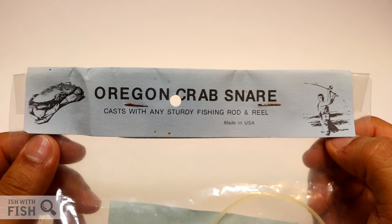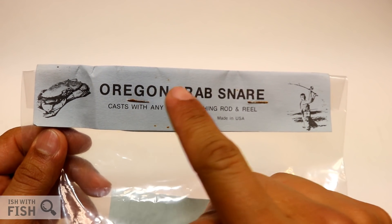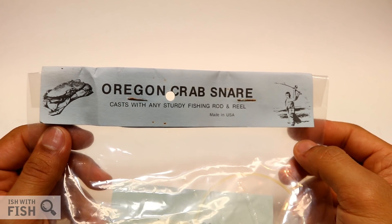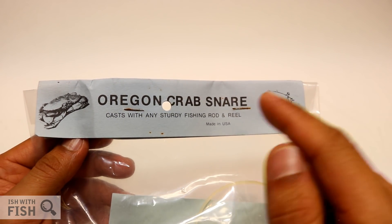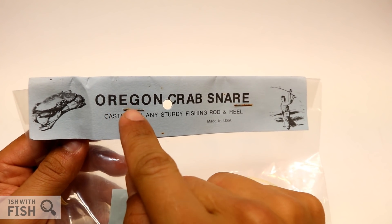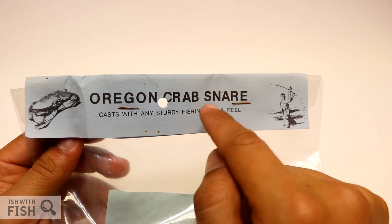In today's video we'll be taking a look at a vintage crab snare called the Oregon Crab Snare. If you're not familiar with crab snaring, it's a really fun method of taking crabs using any heavy fishing rod and reel. In fact, it even says so on the label: the Oregon Crab Snare casts with any sturdy fishing rod and reel.